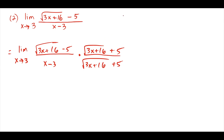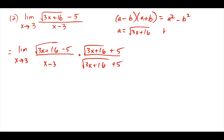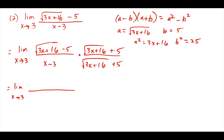When we multiply a binomial by its conjugate, the quick result is a squared minus b squared, where a is the first term — here, square root of (3x plus 16) — and b is the second term, 5. So a squared is (3x plus 16) and b squared is 25. In the numerator we get (3x plus 16) minus 25. The outside and inside products always cancel when using this technique, leaving just a squared minus b squared.